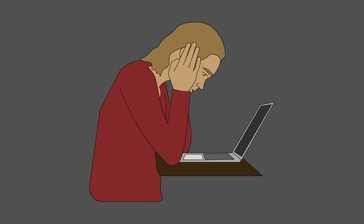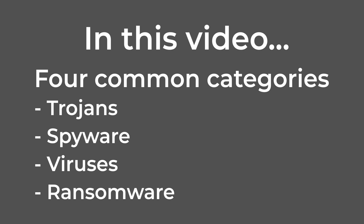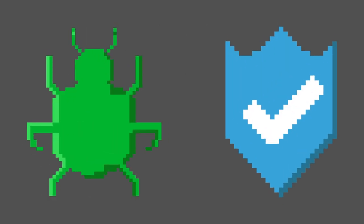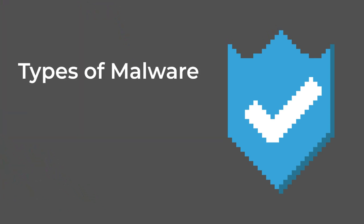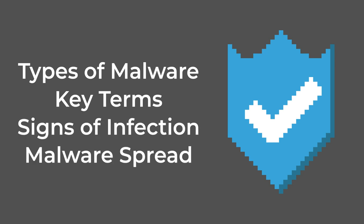If you find this figure overwhelming, you're not alone. In this video, we'll explore four common categories of malware that you should be aware of: Trojans, spyware, viruses, and ransomware. It's important to understand the different types of malware attacks to help you better protect yourself. We will break down each type of malware, explore some key terms, learn the signs of a malware infection, and the ways malware can spread.